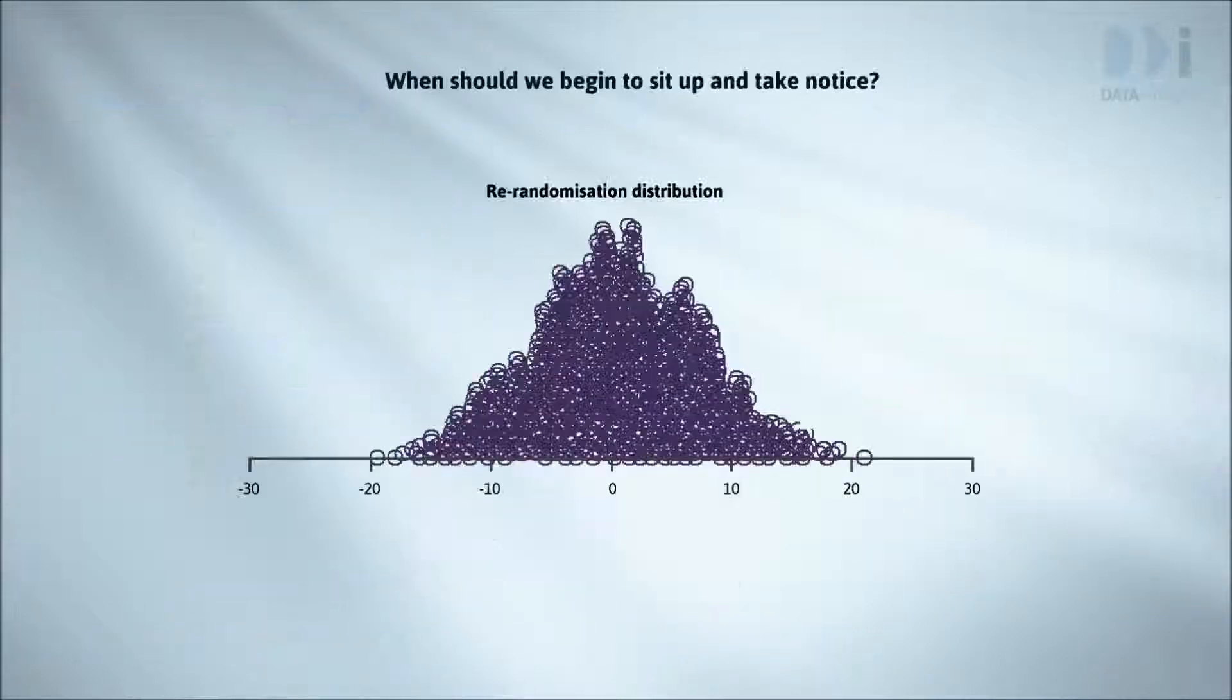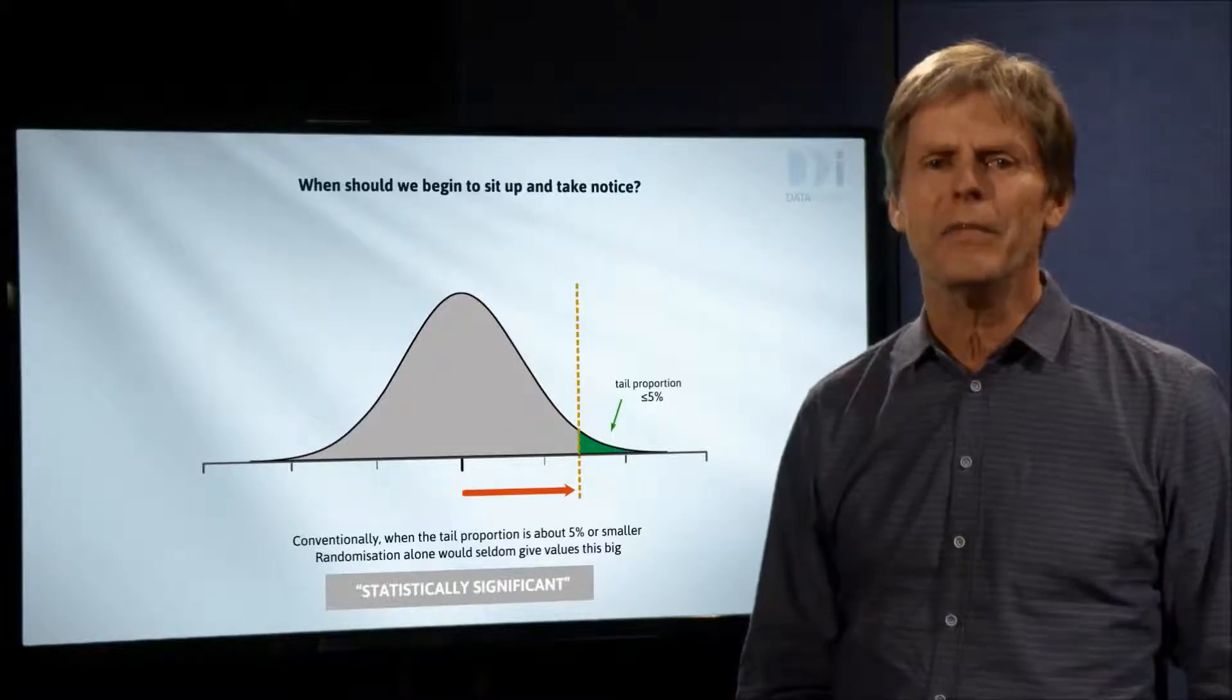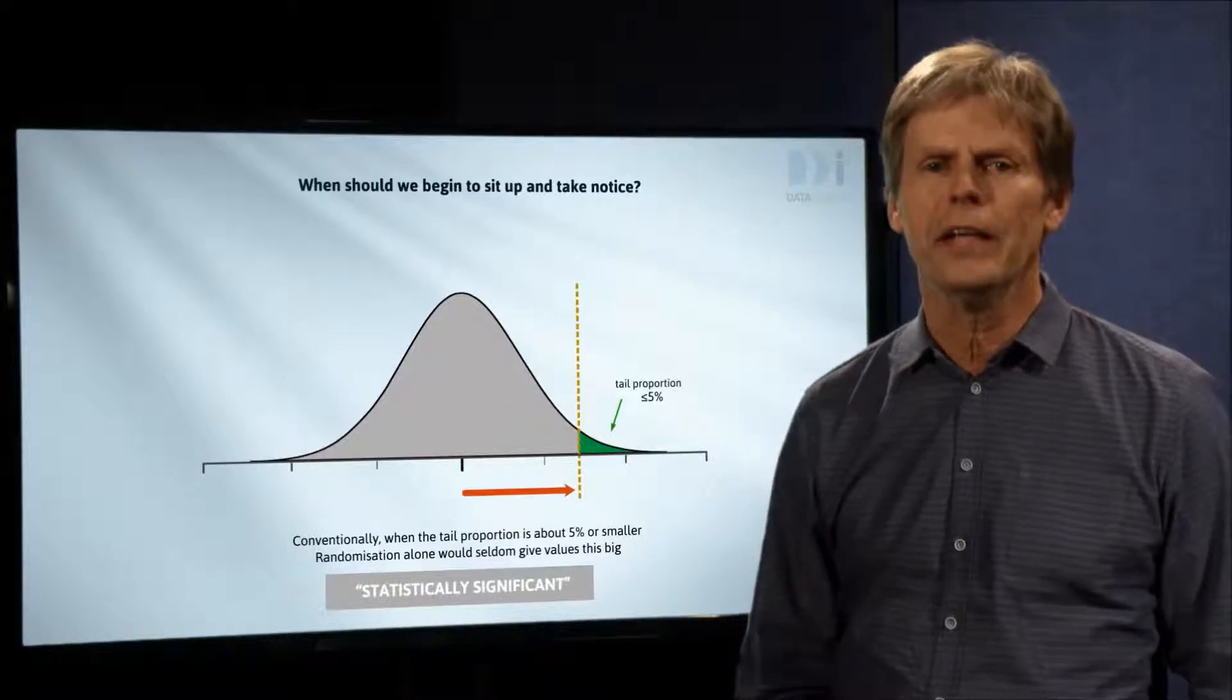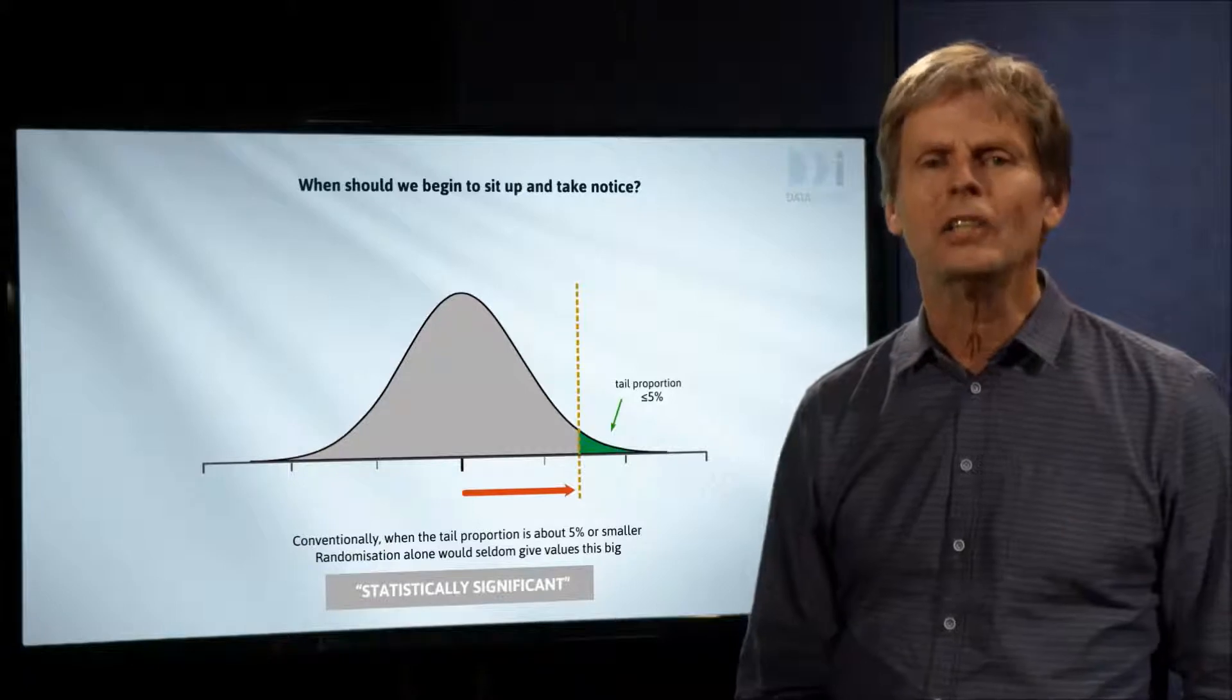We'll claim that we've detected a true difference if the tail area is small enough, say no larger than five percent. If that's the case, the difference is said to be statistically significant. So our operating rule is claim that we've detected a true difference if the observed difference from our data is to the right of the brown dashed line. This has consequences.